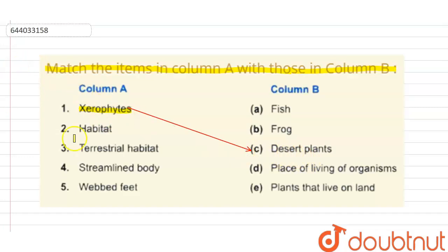Second is habitat. Habitat is a term of ecology which means the place of living of organisms.